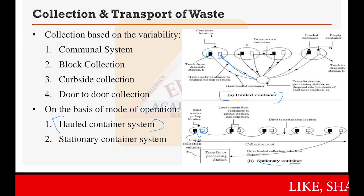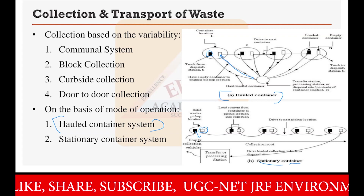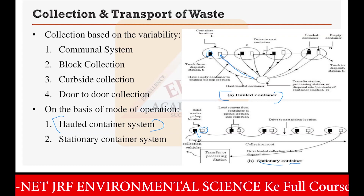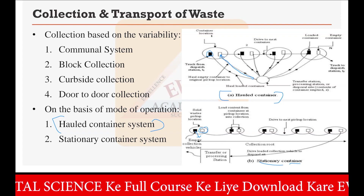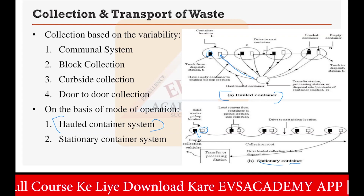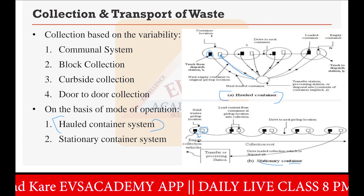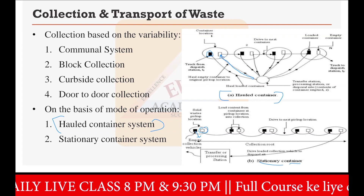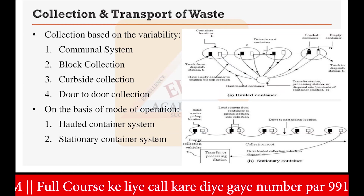By picking up multiple filled containers, the waste is collected from area to area. In the stationary container system, the container is not fixed — it is moving — but there is always a particular container available at that particular site. These are the two different types of collection systems based on the mode of operation.